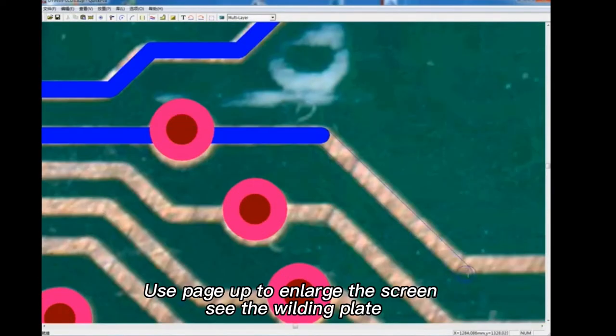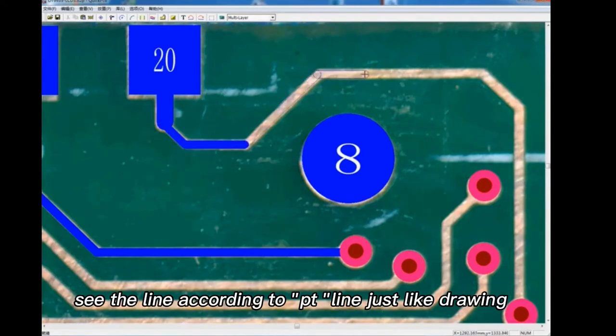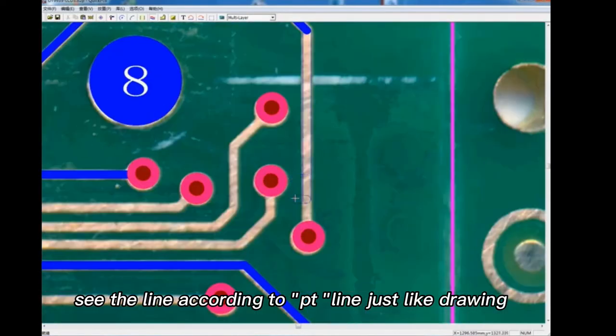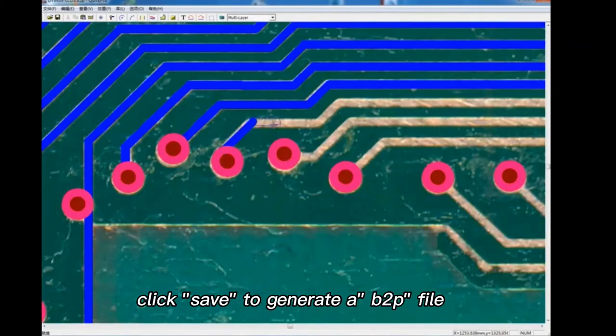Use PageUp to enlarge the screen, see the welding plate. Press PP, place a welding plate. See the line according to PT line, just like drawing. Draw again in this software, click save to generate a BRP file.